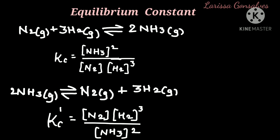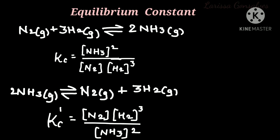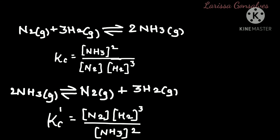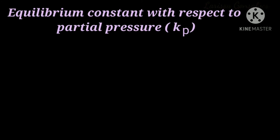A simple trick to remember: when writing KC, the species on the product side are written in the numerator and those on the reactant side in the denominator. For KC dash, the same reaction is written in reverse form; again products go on top and reactants go on the bottom, but this becomes the inverse of KC. Hence KC dash is the reciprocal of the equilibrium constant KC. Let us now move on to the equilibrium constant with respect to partial pressure, represented by KP, where P stands for pressure.